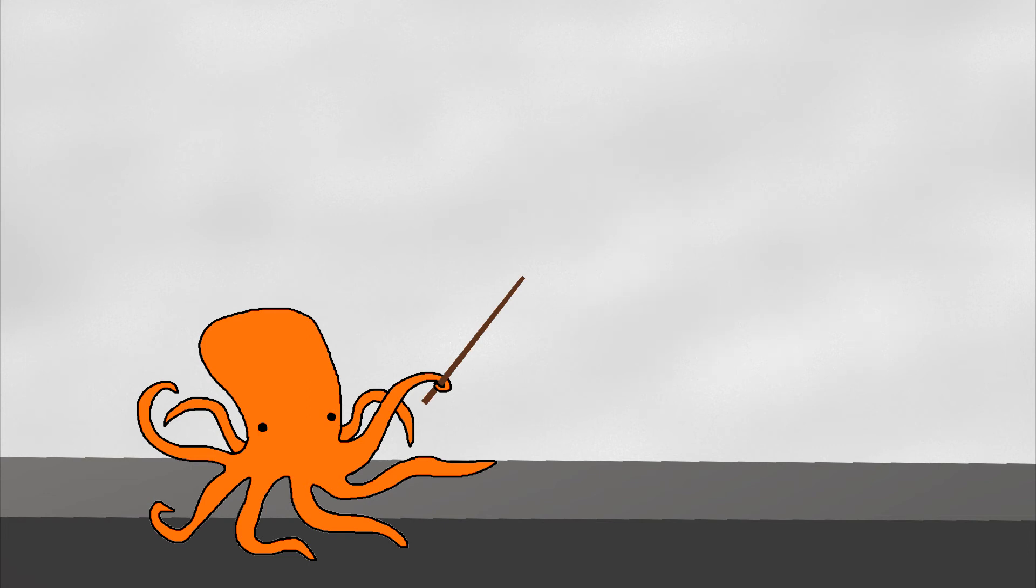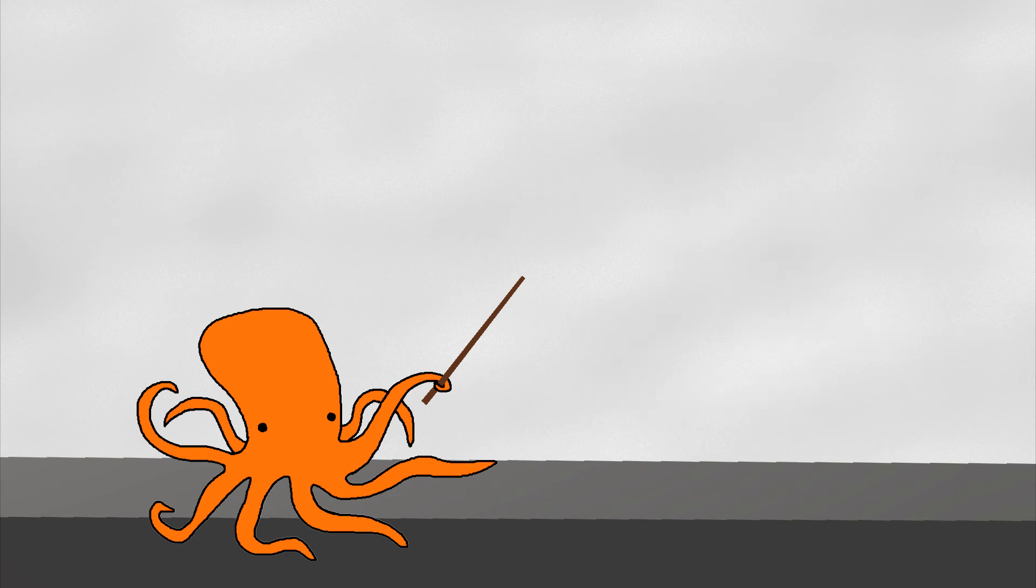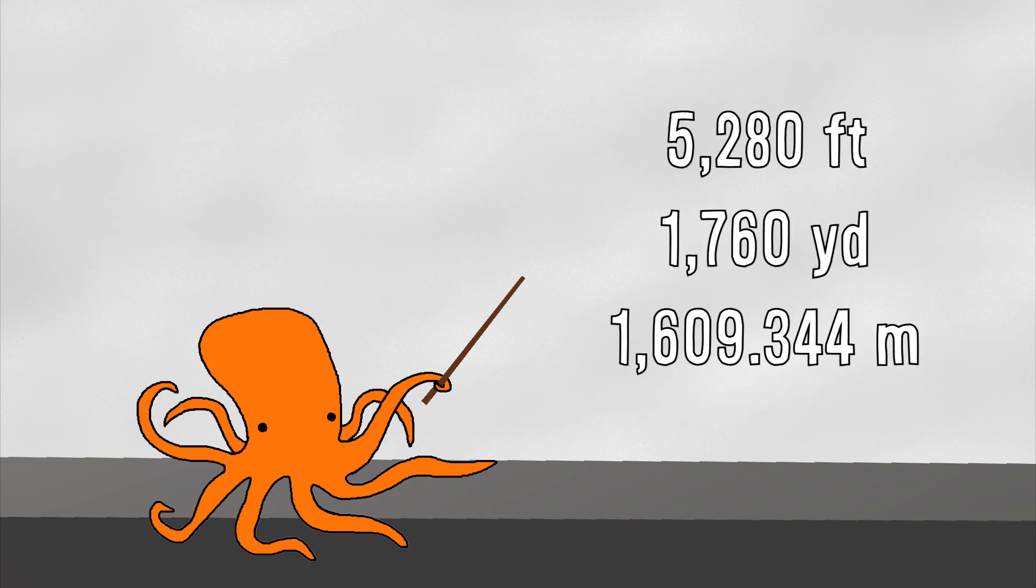But in 1959, various countries including the United States, the United Kingdom, Canada, Australia, New Zealand, and South Africa agreed that a mile would be 5,280 feet, or 1,760 yards, which roughly translates to 1,609.344 meters.